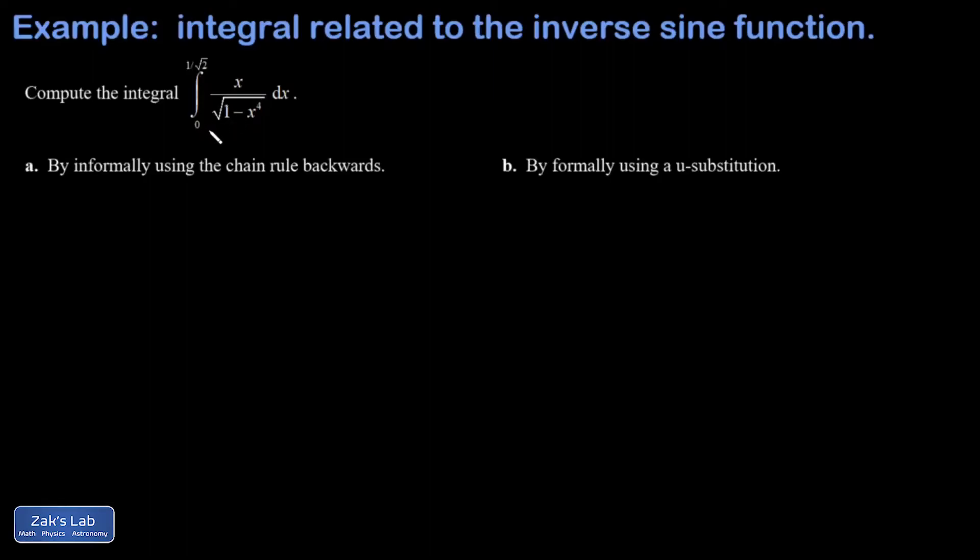In this problem, we're taking a definite integral from 0 to 1 over root 2 of the fraction x over square root 1 minus x to the 4th, and we're asked to perform this integral informally first by recognizing the chain rule backwards, and then we're asked to repeat the integral by using a formal u substitution.